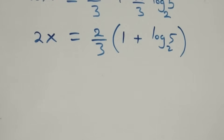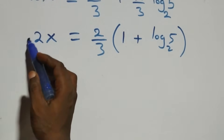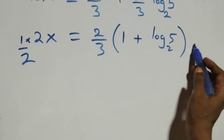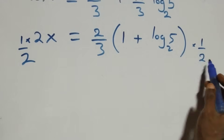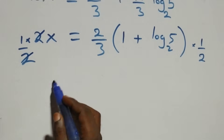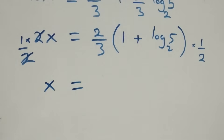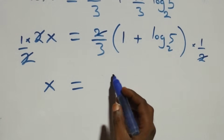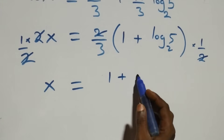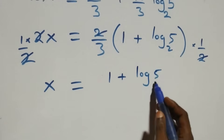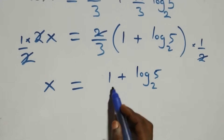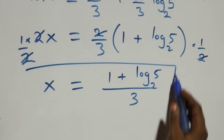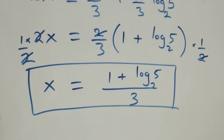We can factor 2 over 3 from the expression, giving 2x equals 2 over 3 times the bracket 1 plus log 5 base 2. To remove the 2 on the left, we multiply both sides by 1 over 2. The 2s cancel, leaving x equals 1 plus log 5 base 2, all over 3.